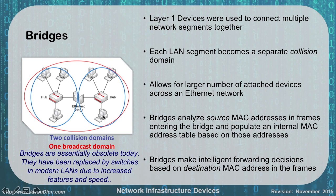But if traffic was going to PC5, the bridge would allow it to pass through, breaking those collision domains in half and allowing more bandwidth and fewer collisions. These bridges made intelligent forwarding decisions based on the destination MAC address in those frames. You can see there are two collision domains, but still only one broadcast domain. The only thing that can break up a broadcast domain is a router. Bridges are fairly obsolete today — they have been replaced by switches in modern LANs because of increased speed and features.